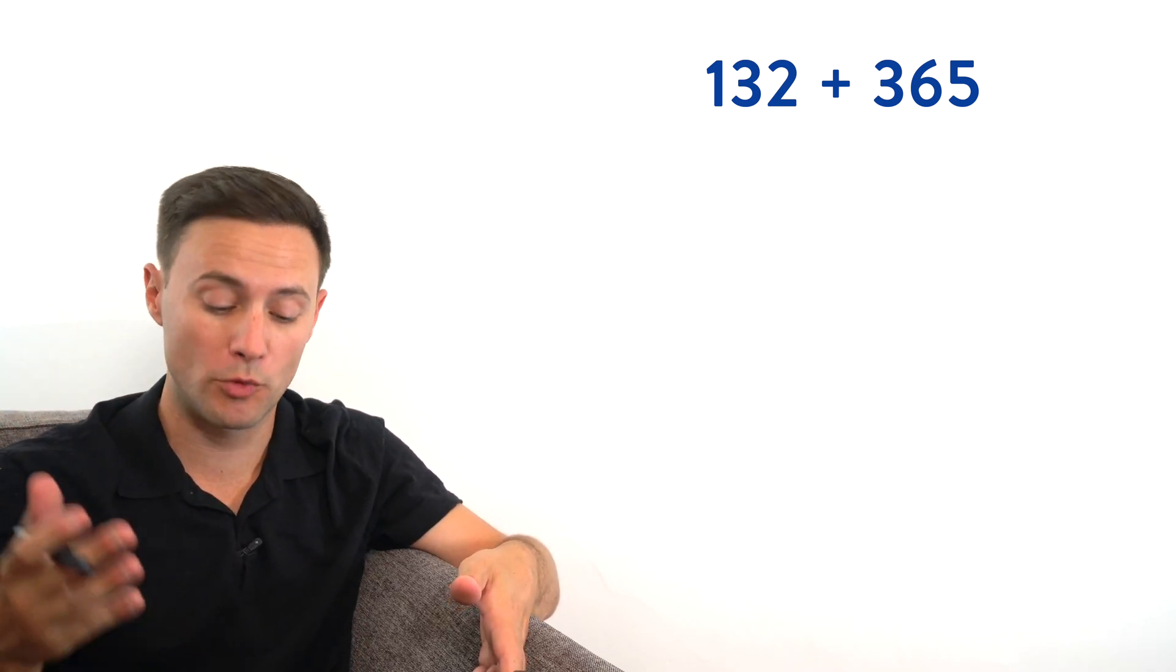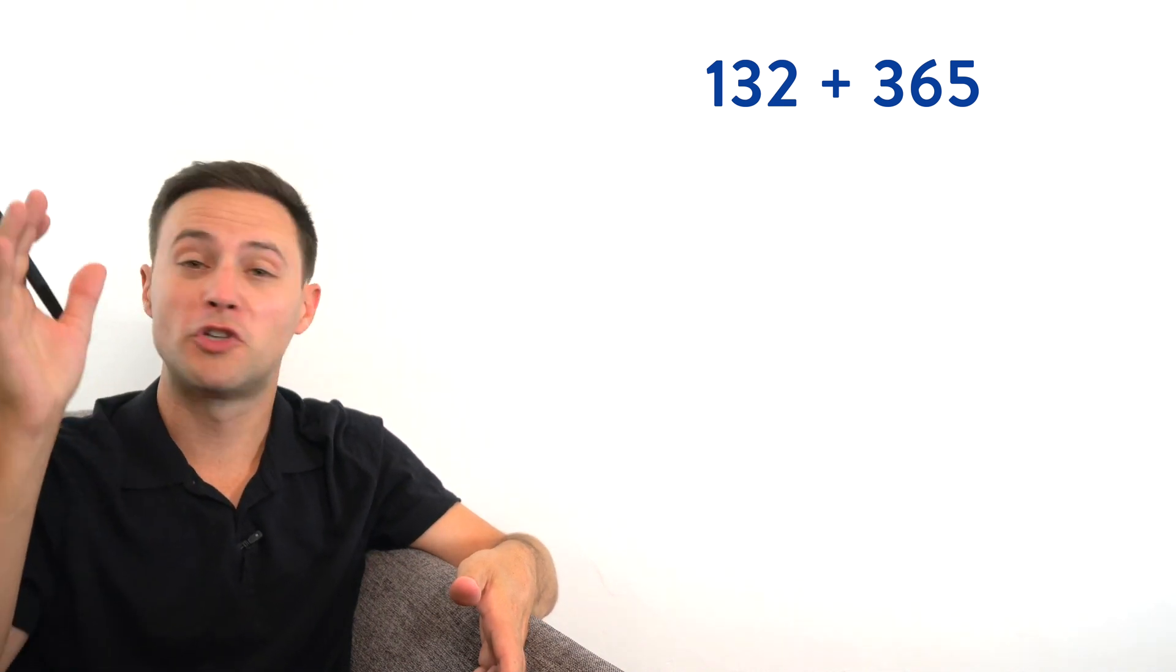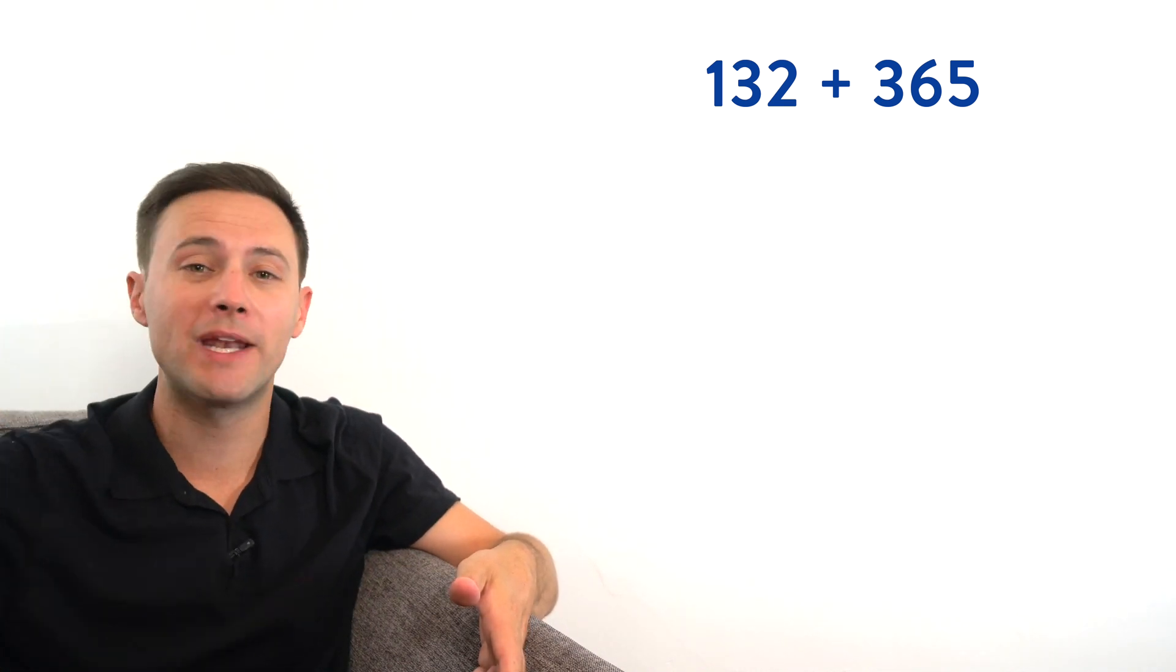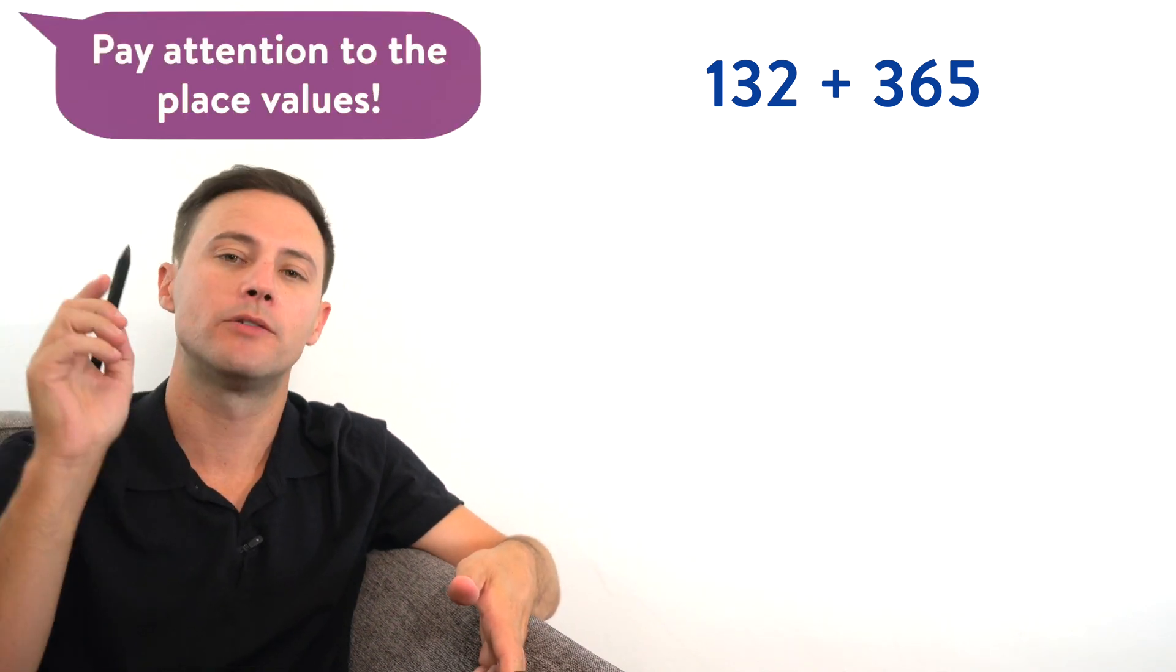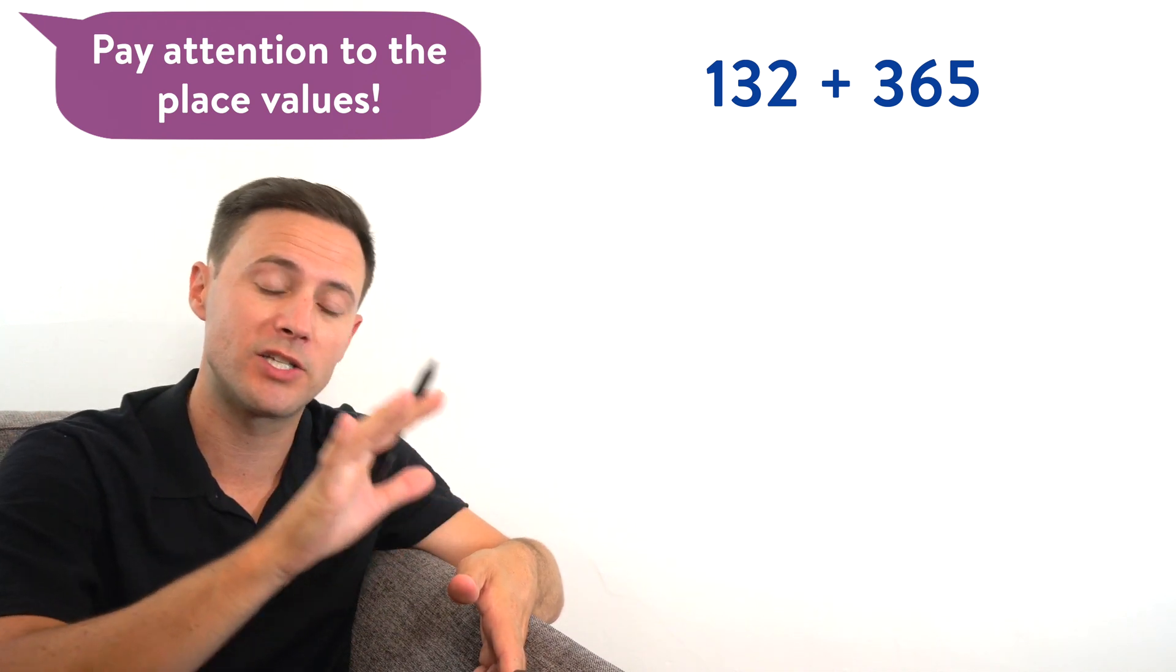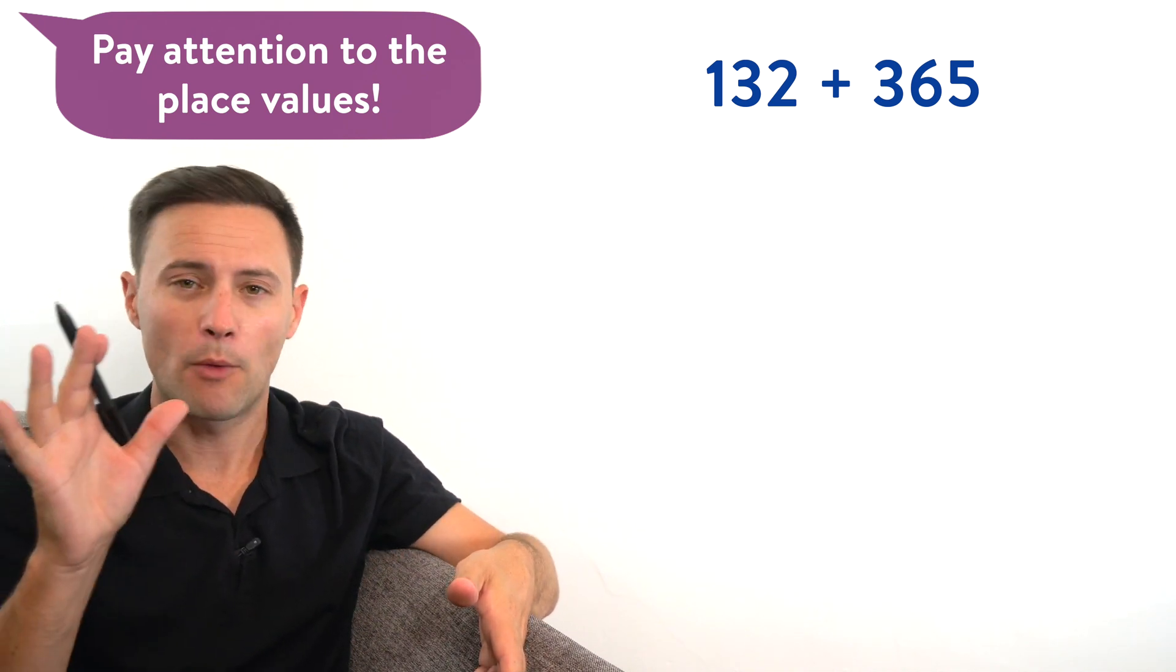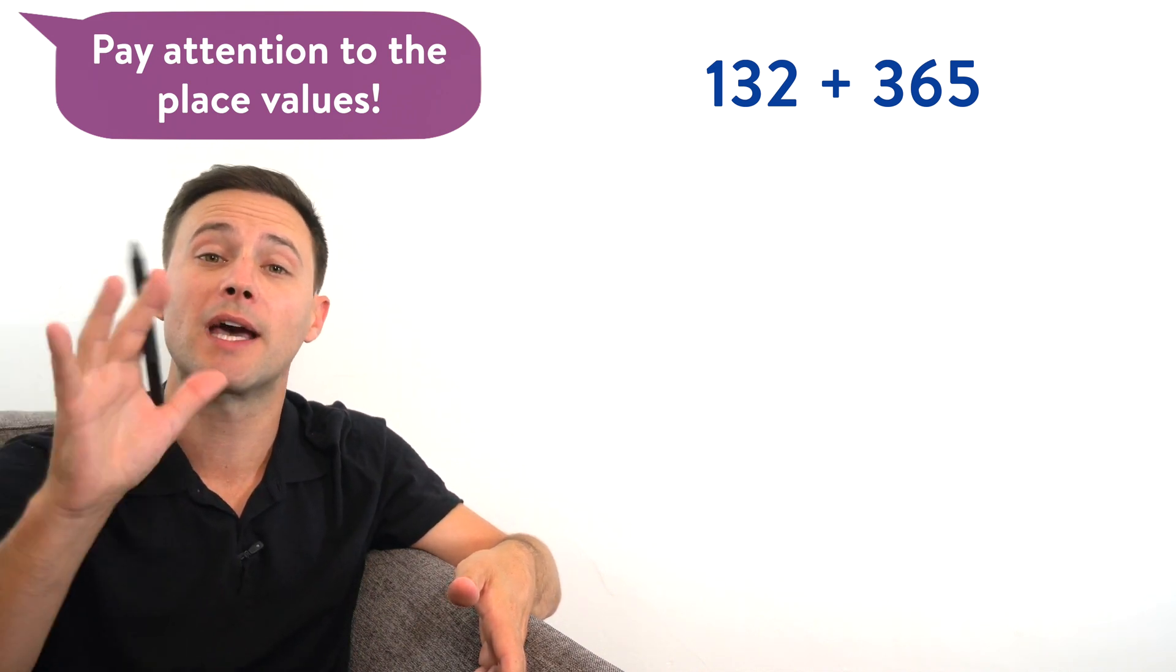So let's try something a little simpler first. For example, what if we wanted to add 132 plus 365? The key with adding two, three, four, however many digit numbers is to pay attention to the place values. That's going to be really important with addition and subtraction, especially. And what do I mean by that?